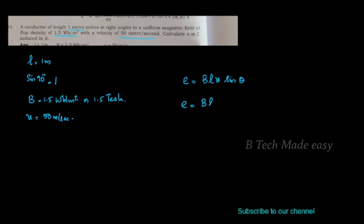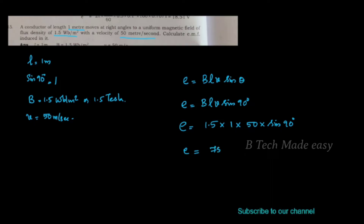The equation is EMF equal to B·L·V·sin(θ). This gives B·L·V·sin(90°). The value of B is 1.5, L is 1, V is 50 meters per second, and sin(90°) is equal to 1. Therefore the EMF is equal to 75 Volts.